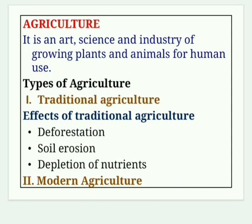Agriculture is defined as the art, science and industry of growing plants and animals for human use. It includes cultivation of soil, growing and harvesting crops, breeding and raising livestock, dairying and forestry. There are two types: traditional agriculture and modern agriculture.